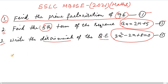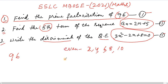To find the prime factorization, we need to understand even and odd numbers. Even numbers are 2, 4, 6, 8, 10 and so on. Odd numbers are 1, 3, 5, 7, 9, 11 and so on. We check whether 96 has factors by dividing by prime numbers.